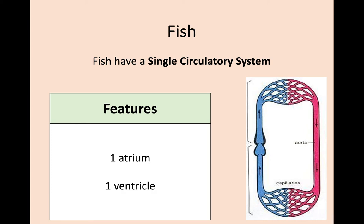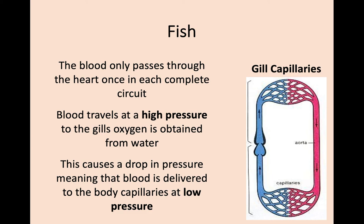Finally, fish have a single circulatory system — one atrium and one ventricle — which is nowhere near as efficient as either of the previous systems. Blood only passes through the heart once in each complete circuit. Blood travels at high pressure to the gills so the fish can obtain oxygen from the water, but as it passes through the gill capillaries there is a big drop in pressure. This means the oxygenated blood is then delivered to the body capillaries at a low pressure.